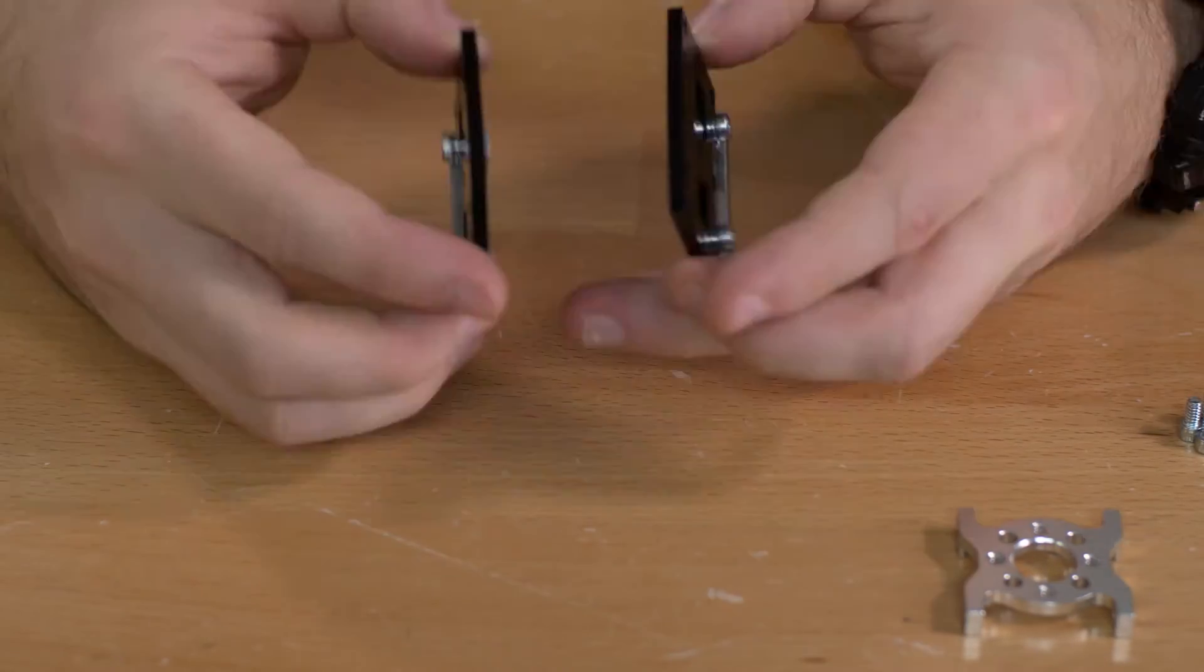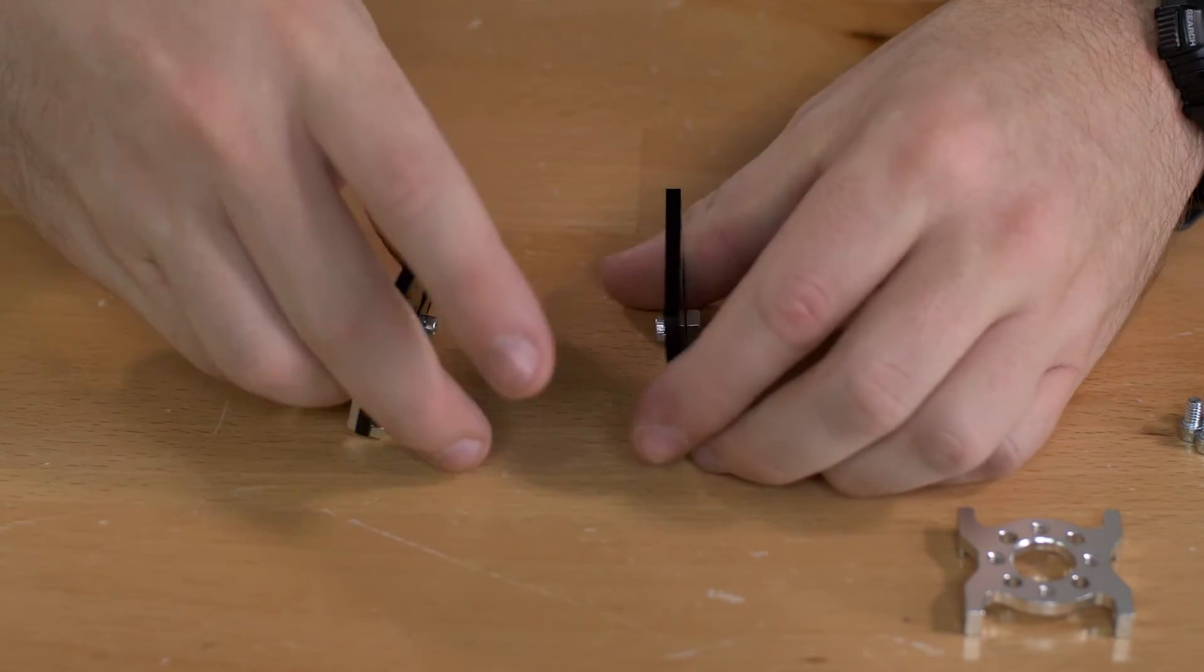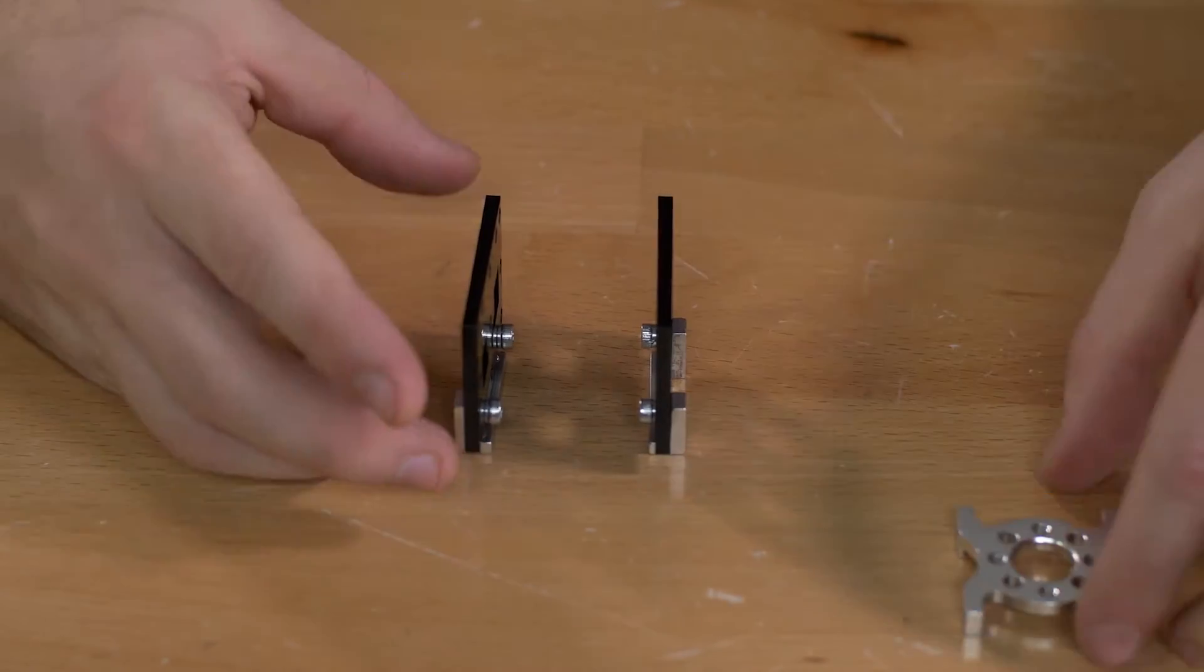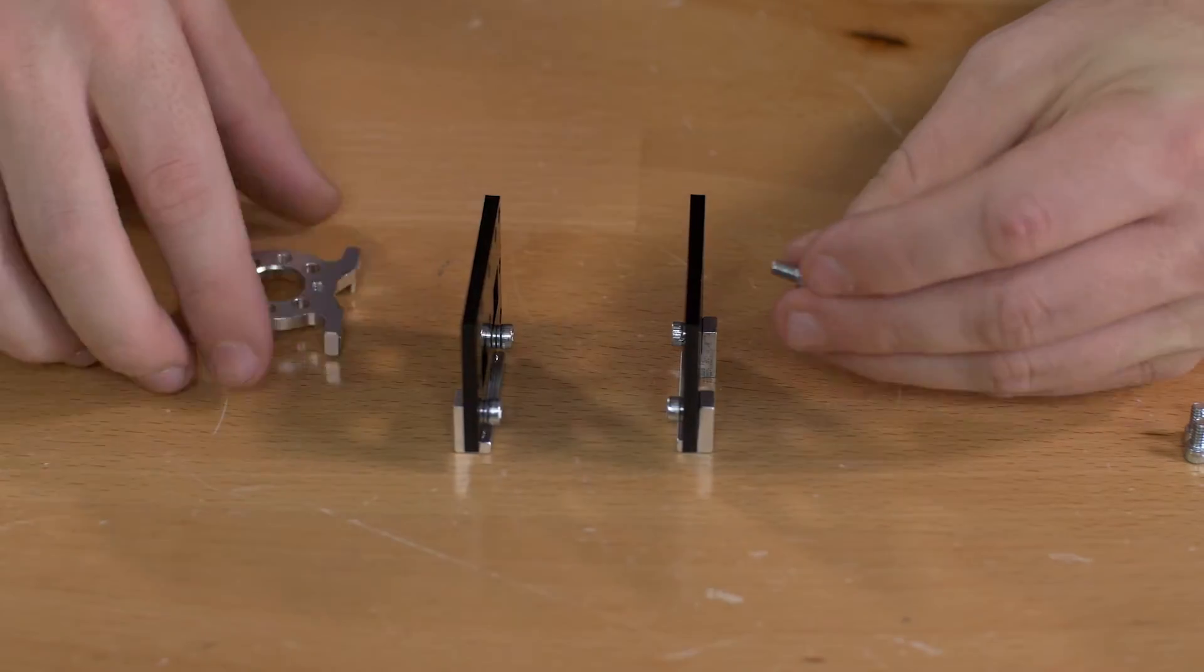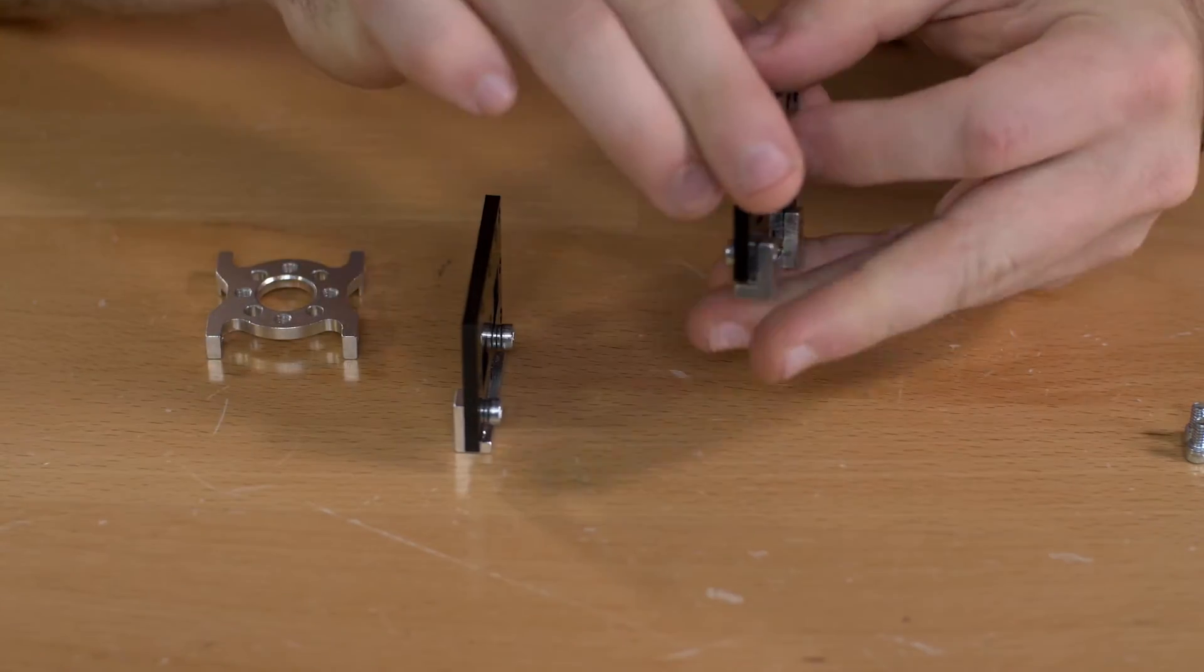Once you have those together you're going to put them together so that the screws are on the inside and use this quad hub mount and quarter inch socket head screws to combine the two pieces together.